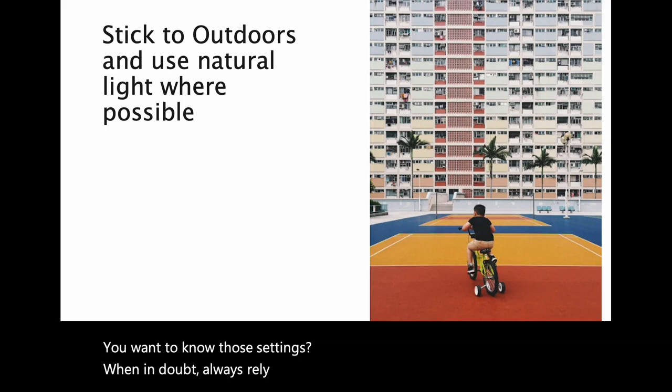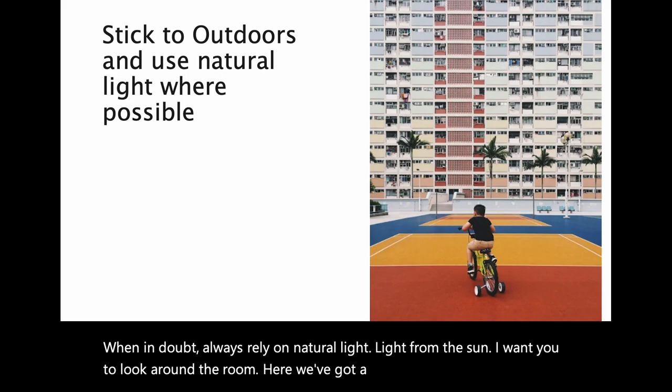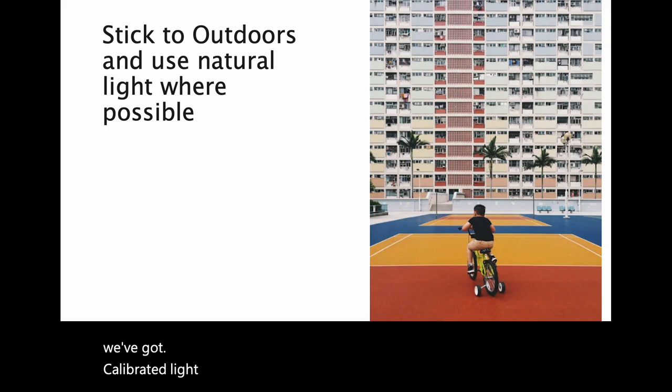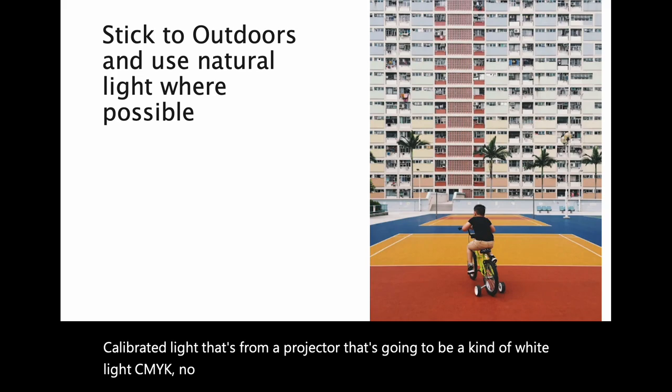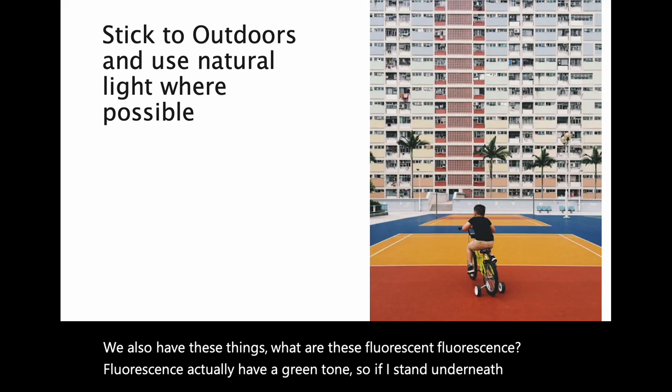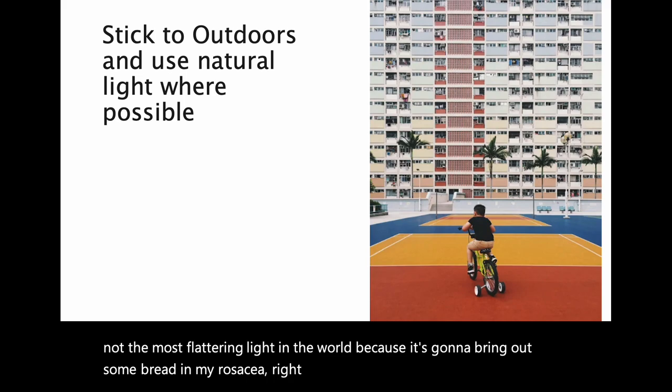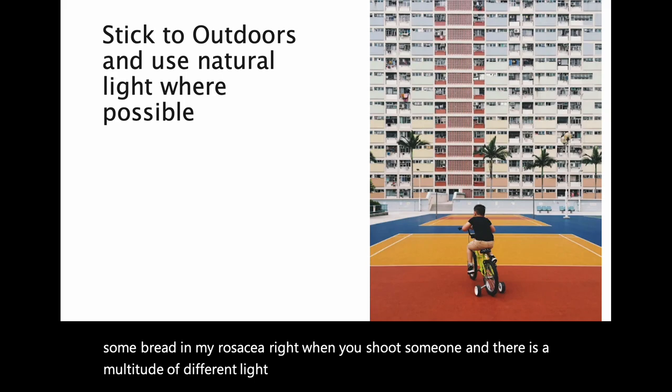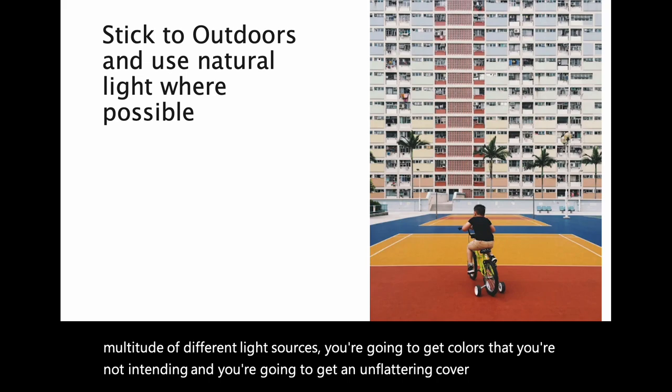When in doubt, always rely on natural light — light from the sun. Look around the room: we've got a projector light in RGB, and we've got fluorescent lights, which actually have a green tone. If I stand underneath them, it's not the most flattering light because it brings out red tones. When you shoot someone with a multitude of different light sources, you're going to get colors you're not intending and an unflattering result. So keep that in mind.